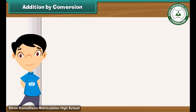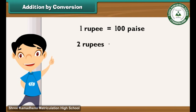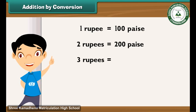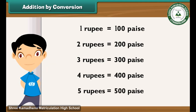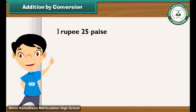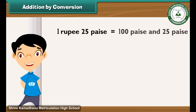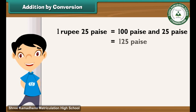Addition by conversion: You are aware that 1 rupee is equal to 100 paise. It means 2 rupees are equal to 200 paise, 3 rupees are equal to 300 paise, 4 rupees are equal to 400 paise, and 5 rupees are equal to 500 paise. So, 1 rupee 25 paise is the same as 100 paise and 25 paise, that is 125 paise.